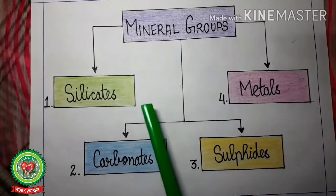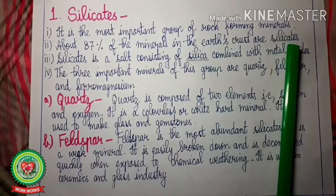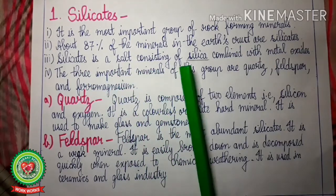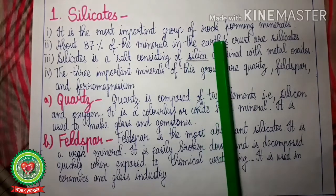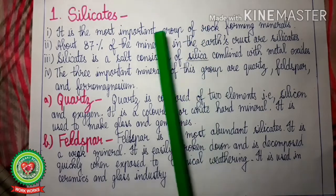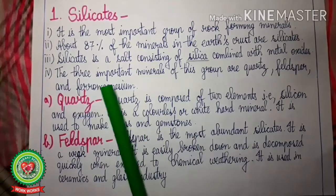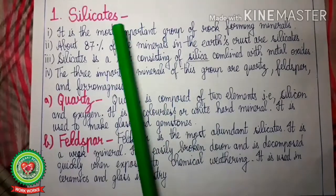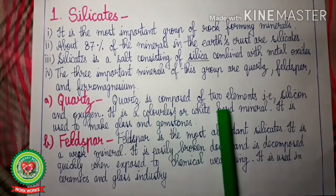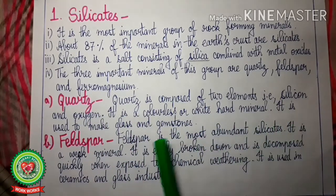First of all, let us discuss silicates in detail. Silicate is the most important group of rock-forming minerals. About 87% of the minerals in the earth's crust are silicates. Silicate is a salt consisting of silica combined with metal oxide. Silica is also known as silicon dioxide. It is most commonly found in nature as quartz, a type of rock, and in various living organisms. In many parts of the world, silica is a major constituent of sand. The 3 important minerals of the silicate group are quartz, feldspar and ferromagnesium. Quartz is composed of 2 elements — silicon and oxygen. Quartz is a colorless or white hard mineral.